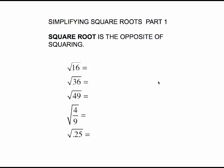The idea of the square root is just that it's the opposite of squaring. So the square root of 16 is 4 because 4 squared gives us 16. The square root of 36 is 6 because 6 squared gives us 36. The square root of 49 is 7 because 7 squared is 49.